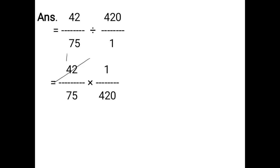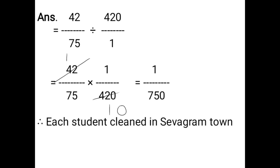42 ones are 42, and 42 tens are 420, so you can do cancellation. Now multiply numerator and denominator. That is equal to 1 upon 750. Therefore, each student cleaned 1 upon 750 part of Sevagram town.